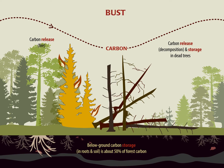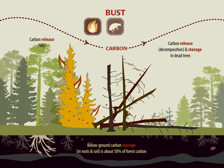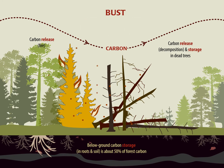Reflecting the bust period of the carbon cycle, carbon is released back to the atmosphere when trees die. Trees die naturally for many reasons such as wildfires, insect infestations, and drought. Some carbon is released quickly, as in the case of fire, but most carbon is released into the atmosphere slowly, as dead trees decompose.